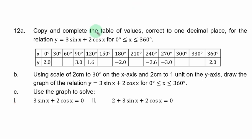Question 12a, copy and complete the table of values, correct to one decimal place for the relation y equal to 3 sin s plus 2 cos s for 0 degrees less than equal to s less than equal to 360 degrees. You have the table of values with some missing y values. You have to get them.